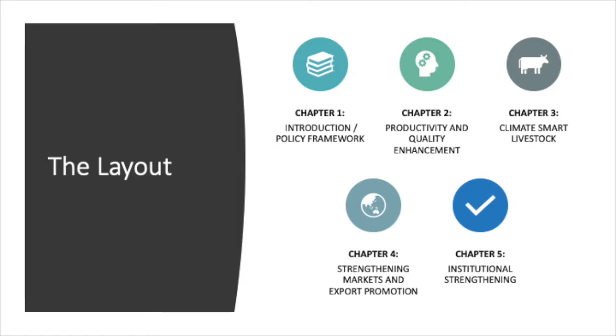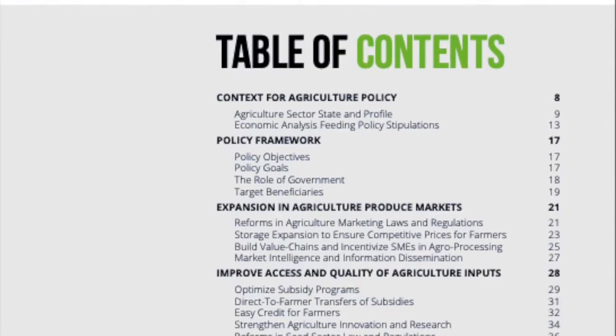I have used the same approach for the livestock policy. I have discussed everything policy-related in the first chapter, whereas the strategies are contained in chapters 2, 3, 4, and 5 of the document. In both cases, I have compartmentalized the strategies in terms of marketing strategies, productivity and quality-related issues, climate change — because it affects agriculture and livestock and is affected by them — and finally, institutional capacities and institution development strategies.